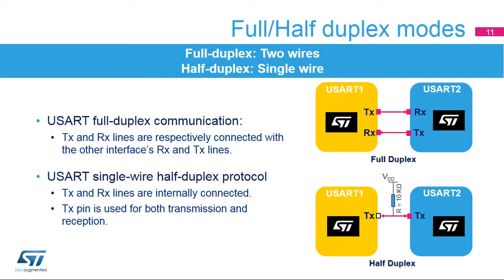The USART supports full-duplex communication, where TX and RX lines are respectively connected with the other interface's RX and TX lines. The USART can be configured to follow a single-wire half-duplex protocol, where the TX and RX lines are internally connected. In this communication mode, only the TX pin is used for both transmission and reception. The TX pin is always released when no data is transmitted, so it acts as a standard I/O in idle or reception modes. The I/O must be configured so that the TX pin is set as an alternate function open drain with an external pull-up.